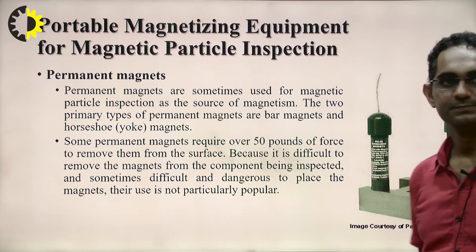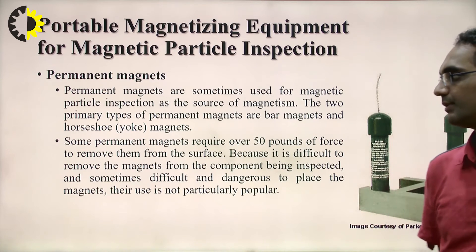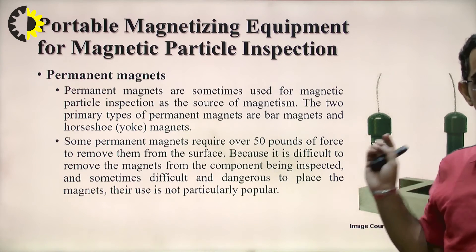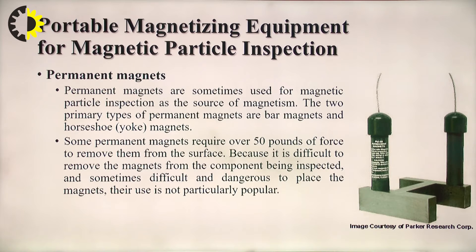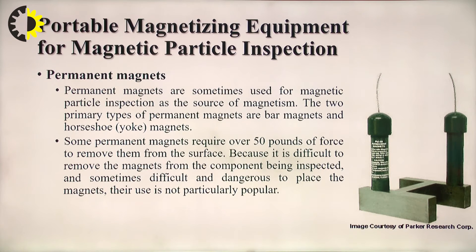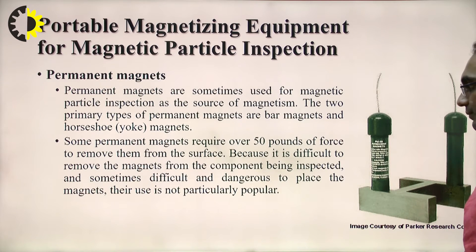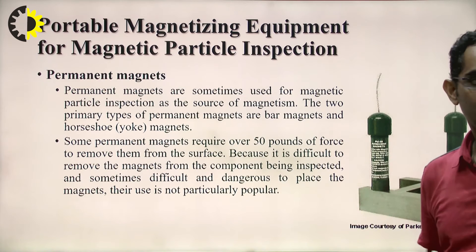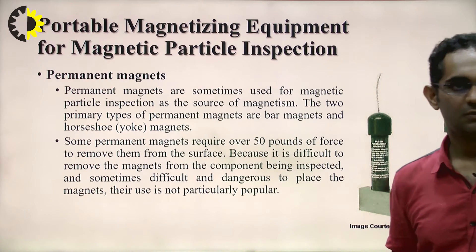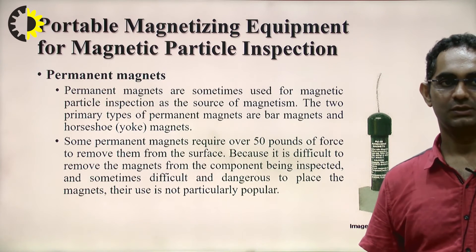Permanent magnets are sometimes used for magnetic particle inspection as the source of magnetism. The two primary types are bar magnets and horseshoe yoke magnets. Some permanent magnets require over 50 pounds of force to remove them from the surface, making them difficult and sometimes dangerous to place and remove from components being inspected, so their use is not particularly preferred.